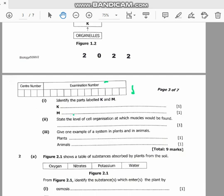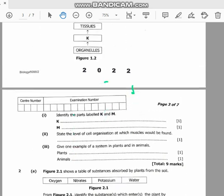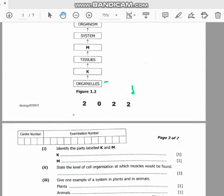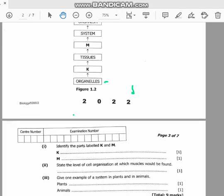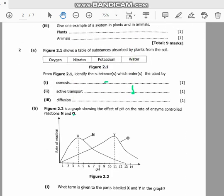Then question 2 states: state the level of cell organization at which muscles would be found. The muscles are found at the tissue level of cell organization.